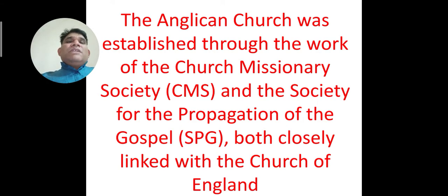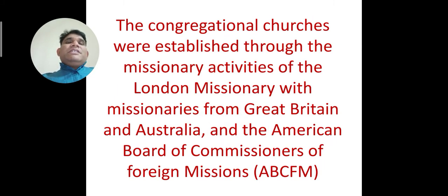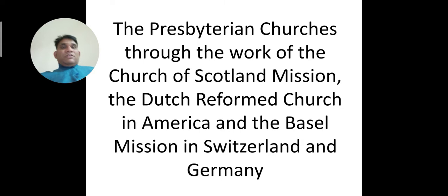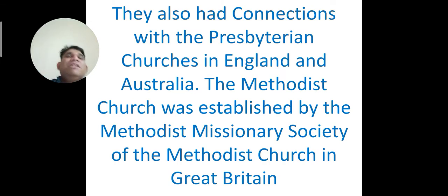The Anglican Church was established through the work of the Church Missionary Society and the Society for the Propagation of the Gospel, both closely linked with the Church of England. The Congregational churches were established through the London Missionary Society with missionaries from Great Britain and Australia, and the American Board of Commissioners of Foreign Missions. The Presbyterian Church through the Church of Scotland Mission, the Dutch Reformed Church in America, and the Basel Mission in Switzerland and Germany, with connections to Presbyterian Churches in England and Australia. The Methodist Church was established by the Methodist Missionary Society of the Methodist Church in Great Britain.